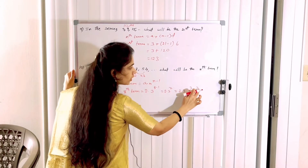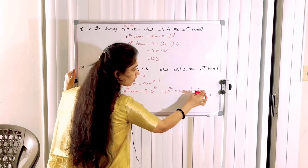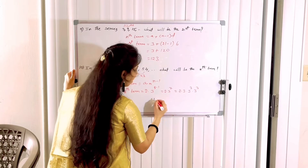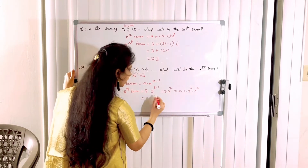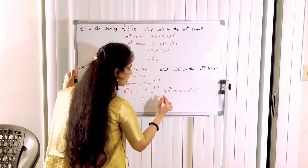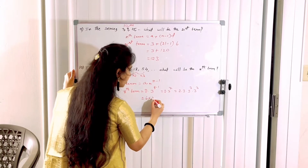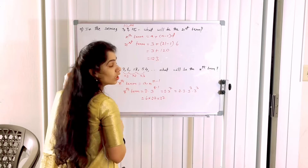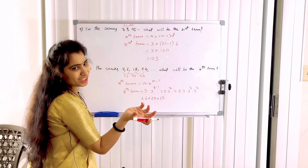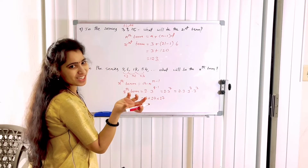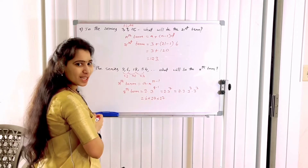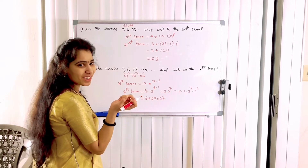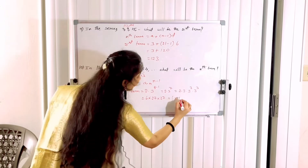3 power 1, 3 power 3, 3 power 3 — since the base is the same, add the powers to get 3 power 7. Simplifying: 2 × 3 = 6. Then 6 × 27 × 27. 27 squared equals 729.